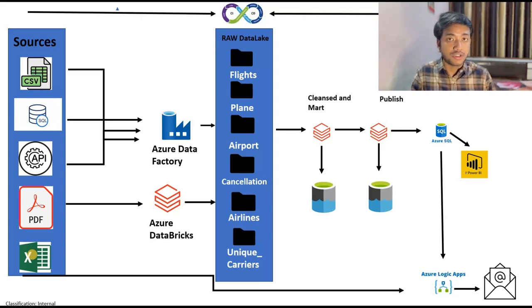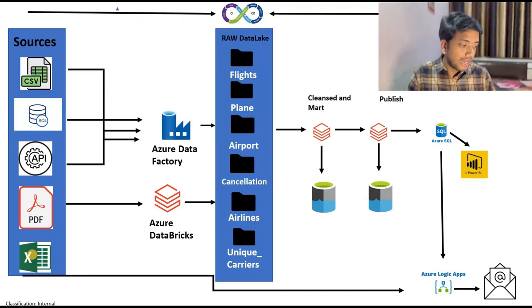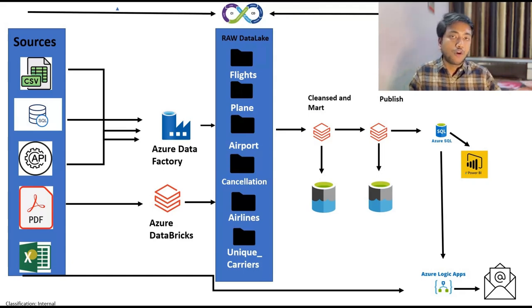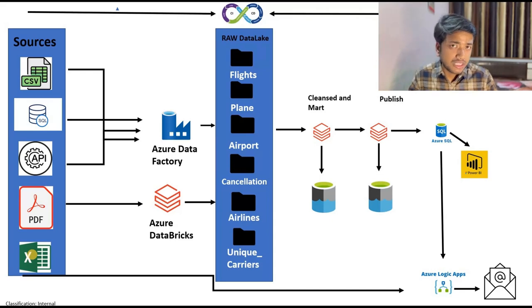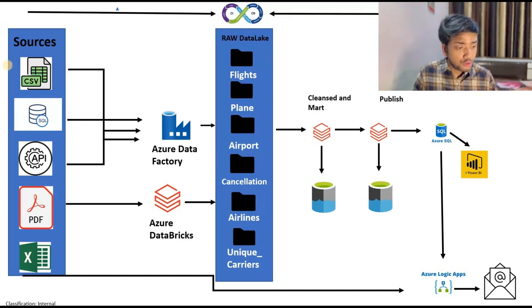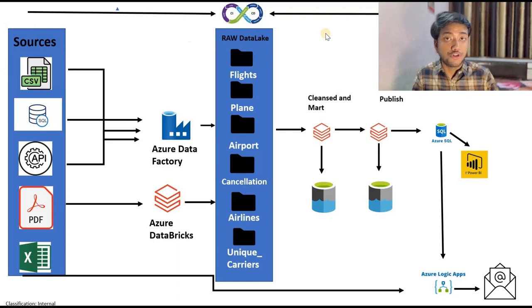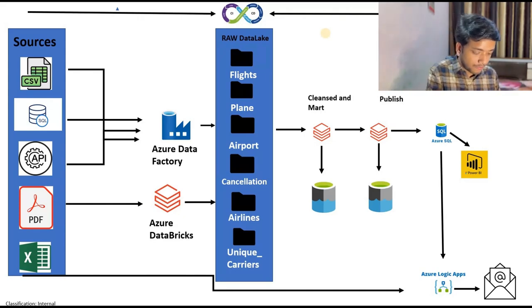I also told you what an Automation Account Runbook is, how to set it up and what its application is. Then I covered Power BI — what it is, how to create a report and do some checks. Apart from this, I also showed you CI/CD pipelines, what DevOps is, what a build is, what an artifact is, what a release is, and other related concepts.